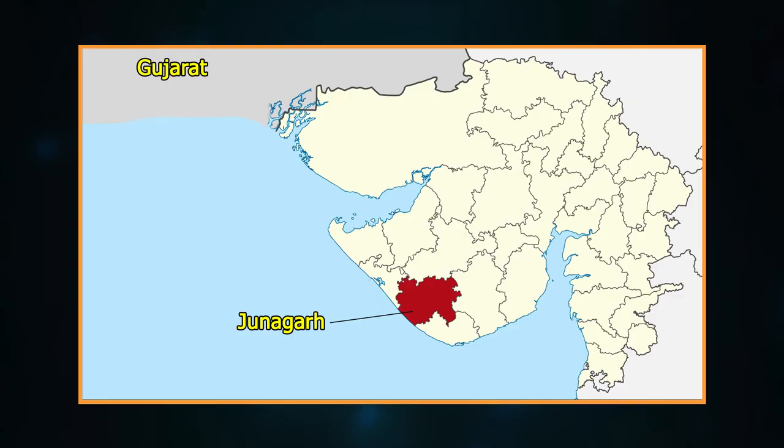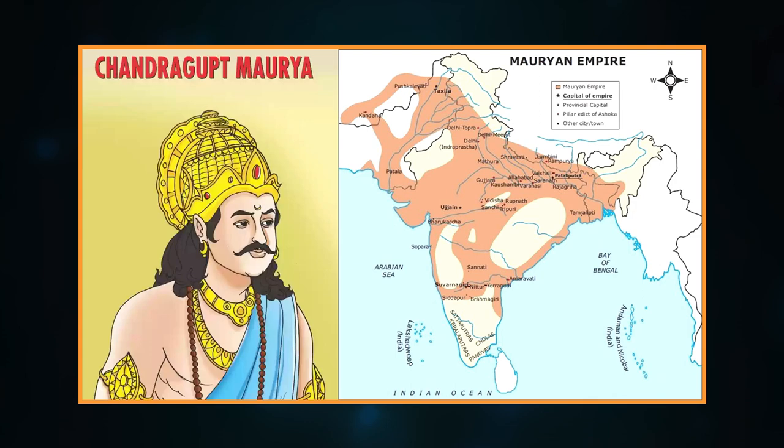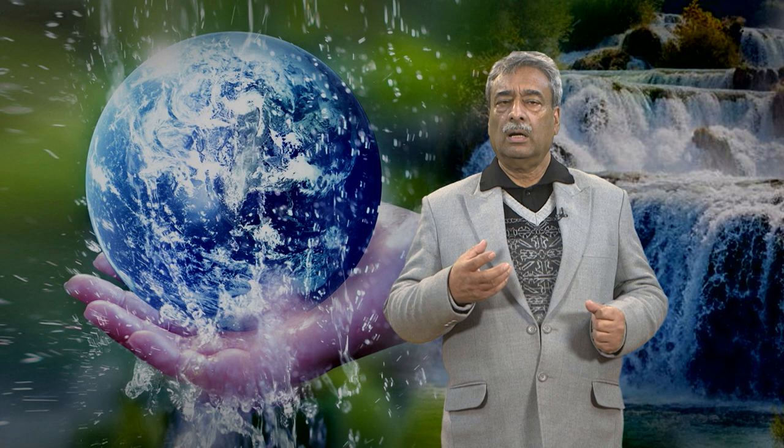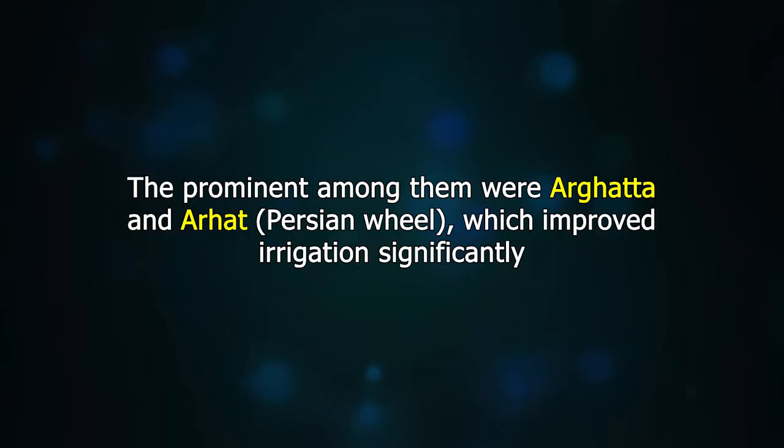Epigraphic evidence affirms the construction of a big reservoir by damming a stream in the Junagadh district of Gujarat by Pushyagupta, the governor of the region during Chandragupta Maurya's reign. The reservoir was named Sudarshana. Since medieval India was also a largely agricultural society, the resource use practice of water was geared at providing irrigation to fields. A few new techniques were introduced during this period — the prominent among them were 'Arghata' and 'Arahat,' which improved irrigation significantly.